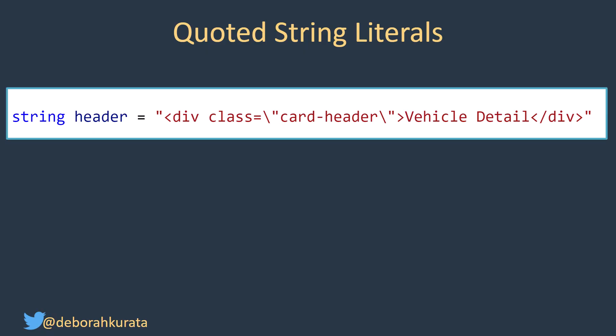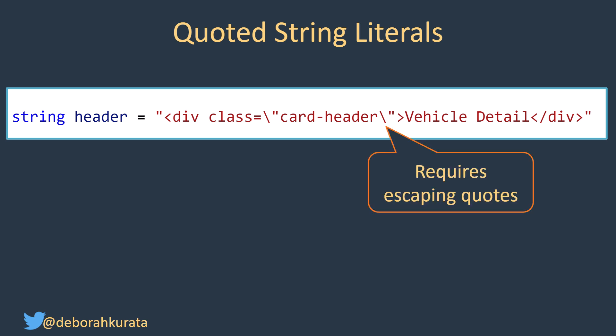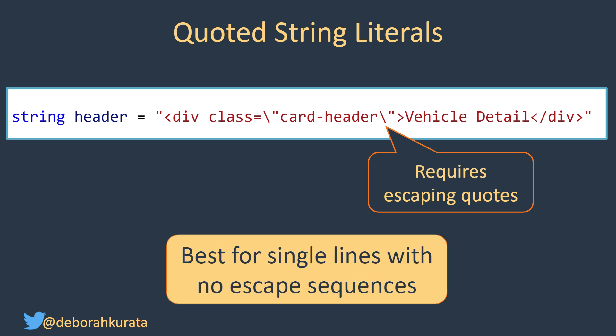The primary way we've worked with strings in C# is using a quoted string literal. These have been available since the beginning of C#, but if we have quotes in our string, the string gets a bit messy. We escape those quotes with a backslash so the C# compiler can tell the difference between the outside quotes and any quotes embedded within the string.